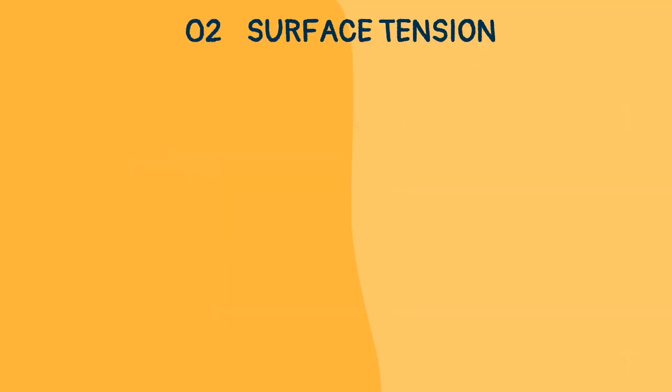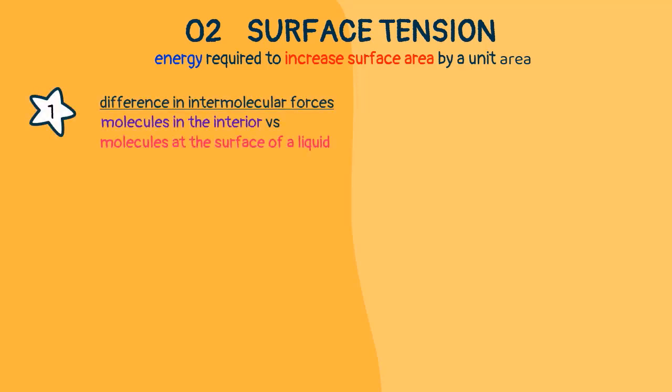Surface tension is the energy required to increase surface area by a unit area. To understand this term, we might think of a few examples like drops of water, insects walking on water, or a paperclip floating on water. This phenomenon is explained by surface tension. Surface tension is caused by the difference in intermolecular forces experienced by the molecules in the interior and those at the surface of a liquid.